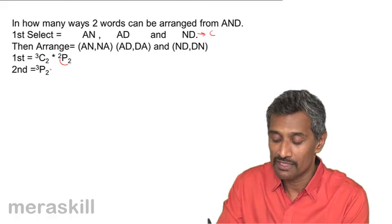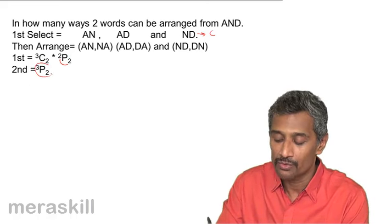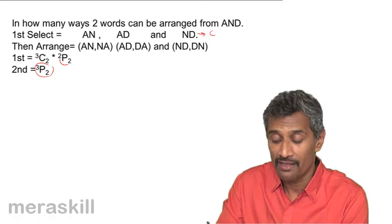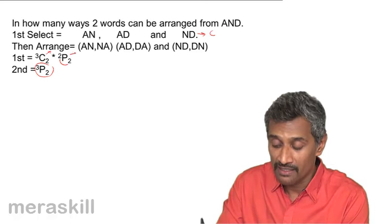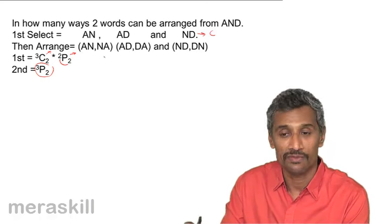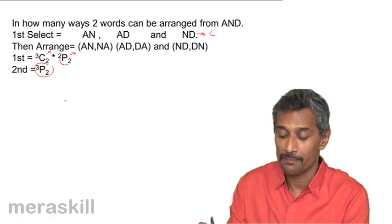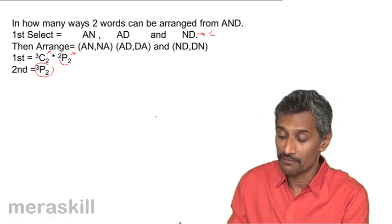So that means 2 factorial ways, which is the same as 3P2. So it also tells again that you're selecting first and then arranging each of these 2 in 2 different ways or 2 factorial ways. So hence we get this particular formula.